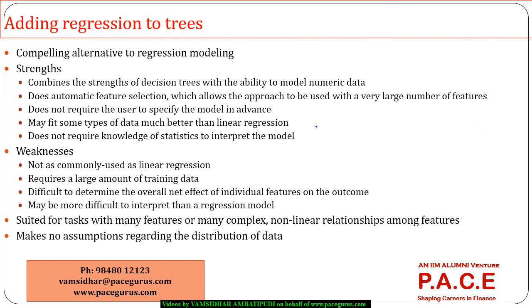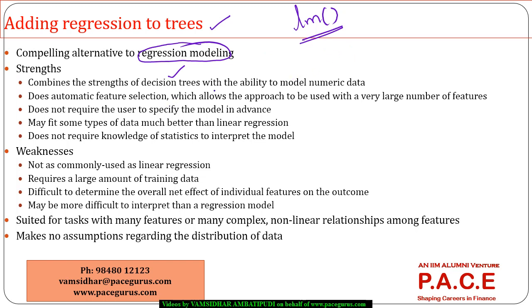Coming into the process: adding regression to trees should be viewed as an alternative to the regression model created using the LM function. It is a combination of regression — used for modeling numeric data — along with decision trees, which are primarily doing the partitioning of the data. That's where this model should be more efficient compared to the typical regression model.